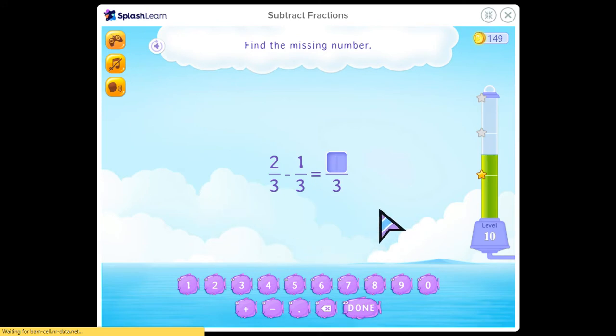Find the missing number. 2 thirds minus 1 third equals 1 third, because 2 minus 1 is 1. And it's asking us for the numerator. So only focus on the numerator. If it's asking for the denominator, focus on the denominator.